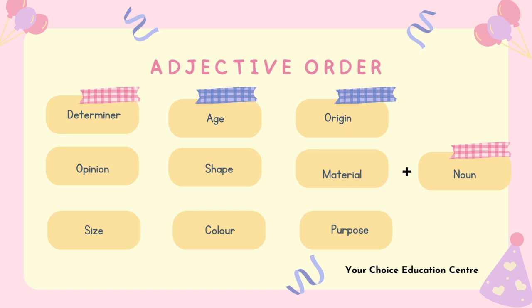The correct adjective order is: determiner, opinion, size, age, shape, color, origin, material, purpose. This order can help you understand and use adjectives correctly.